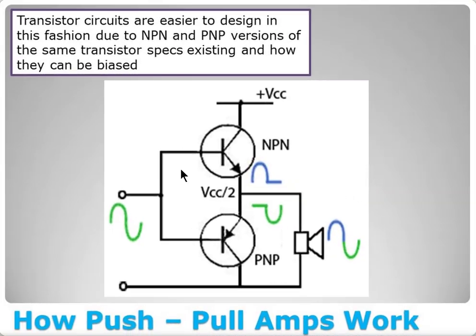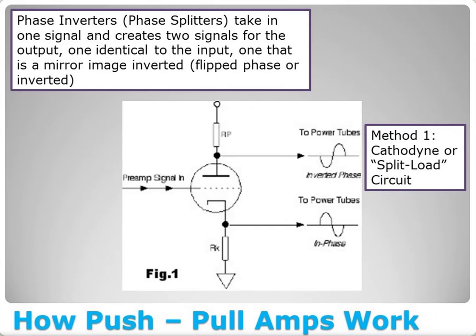With transistors, you can buy an NPN and a matching PNP transistor — one positively focused, one negatively focused. You can set clean cutoffs on the bias so one amplifies the top half and the other the bottom half, then add them together in a simple circuit. It's not quite so simple in a tube amplifier.